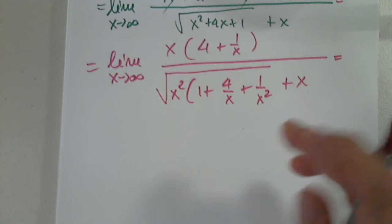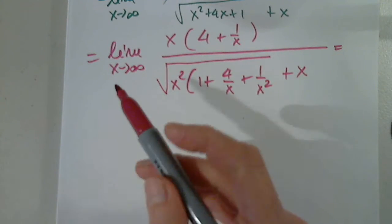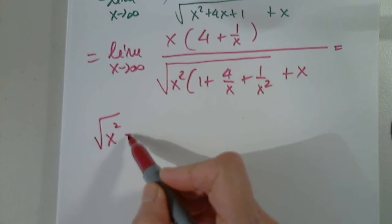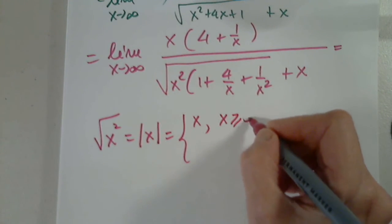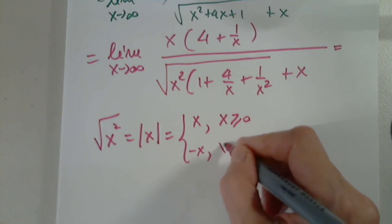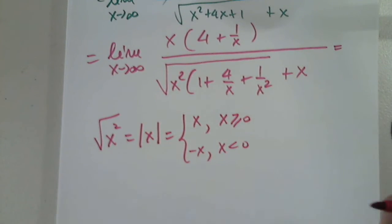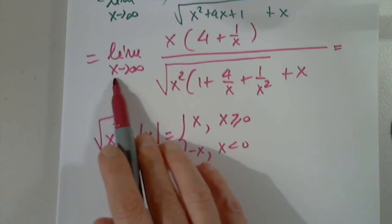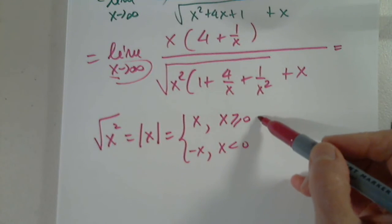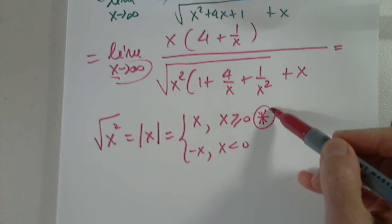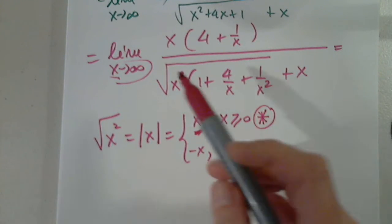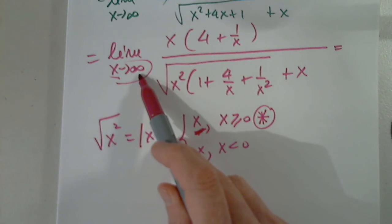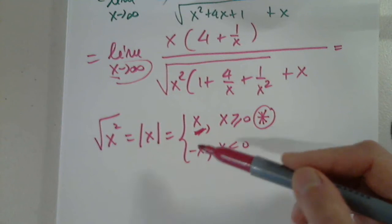As we discussed last week, the square root of X squared is the absolute value of X, which can be positive or negative X. Since X approaches infinity, we are in this situation. So I will replace the square root of X squared by X. If X were to approach negative infinity, I would have replaced it by negative X.